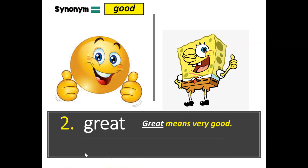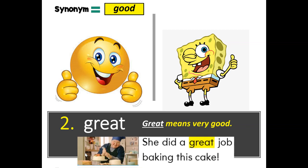Good and great are related to each other. She did a great job baking this cake. You could also say, she did a good job baking this cake. How do I use it? I think that is a great movie, said Mr. Rivera. What is great about your family? You could also say, I think that is a good movie, said Mr. Rivera. What is good about your family?